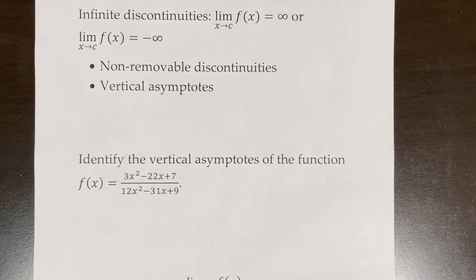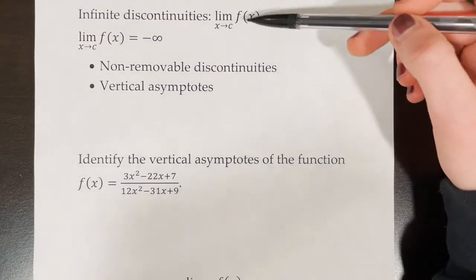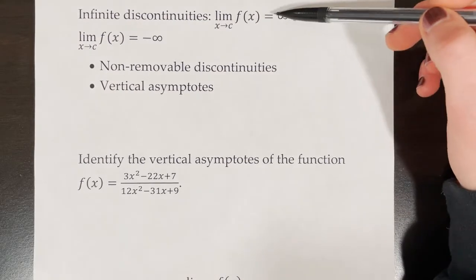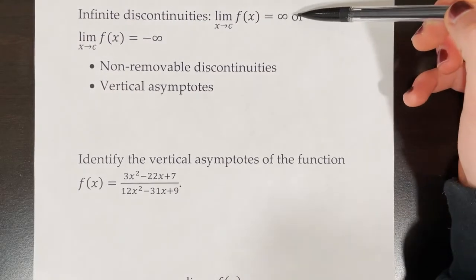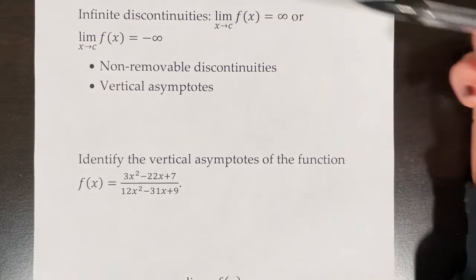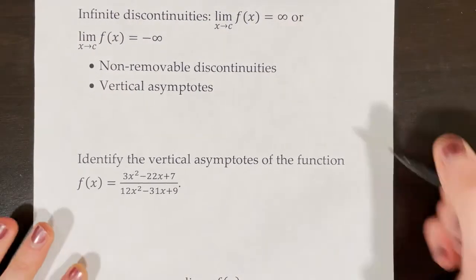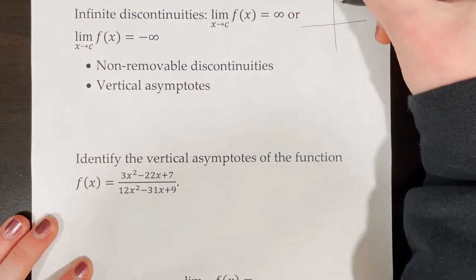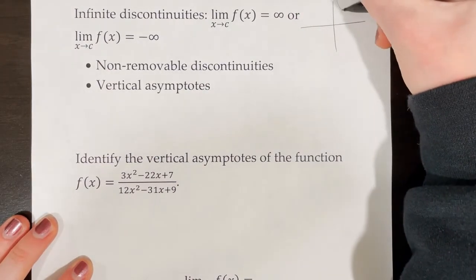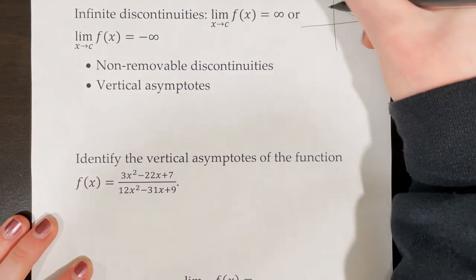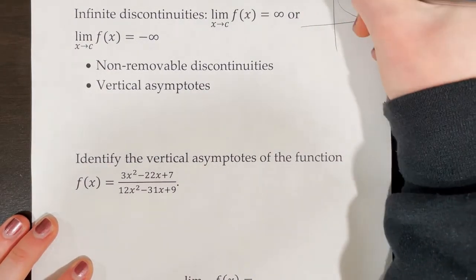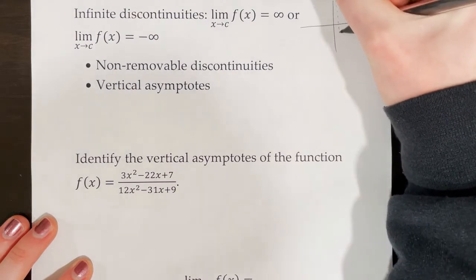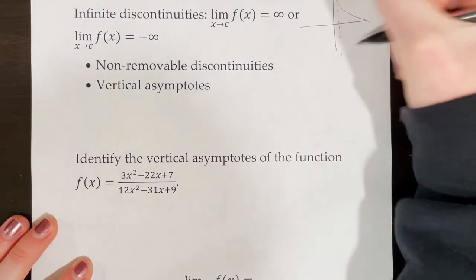Infinite discontinuities occur when the limit of f(x) as x approaches a certain number equals infinity or negative infinity. What this would look like on a graph is a rational function with a vertical asymptote at a certain value.